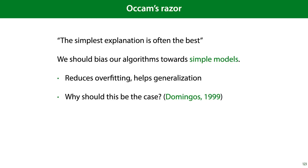One suggestion is that the datasets that the universe generates for us have a bias for simplicity. If this is the case, it explains why methods like Occam's razor work, which states that the simplest explanation is often the best. As a result, we should bias our algorithms towards simple models. This is known to reduce overfitting and to help generalization, but it's not entirely clear why this should be the case.